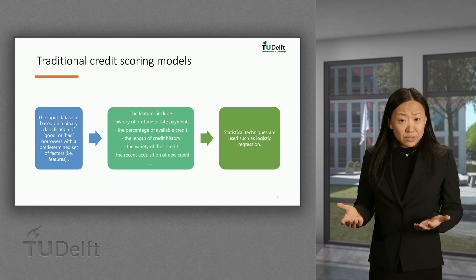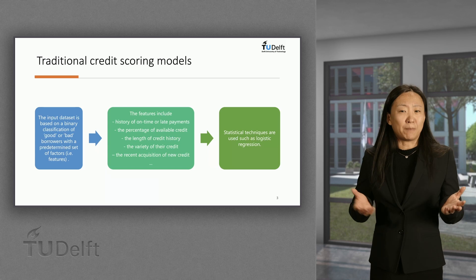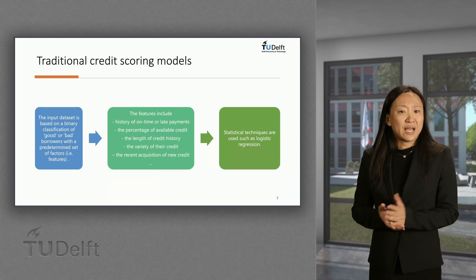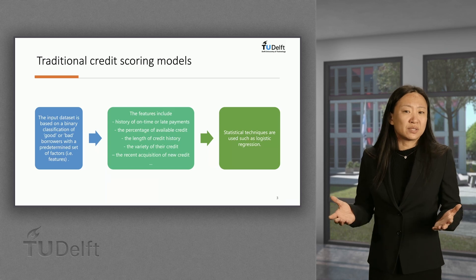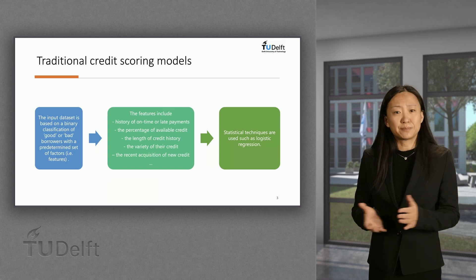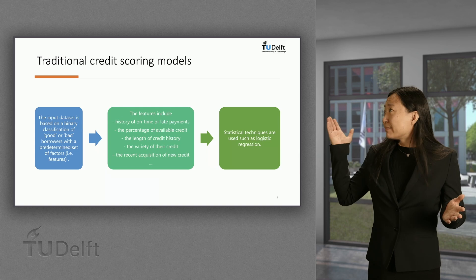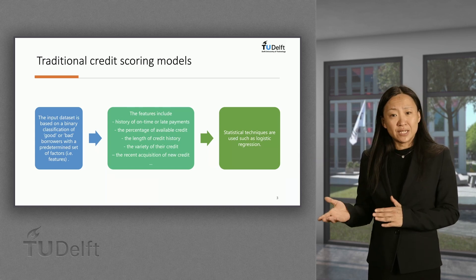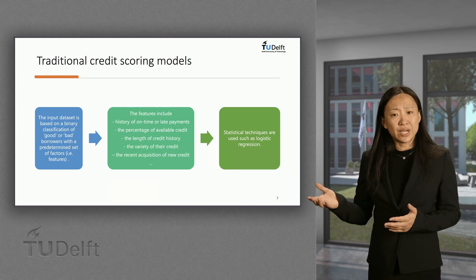Traditional credit scoring models take a binary classification of good or bad borrowers as an input, together with a predetermined set of factors, or in other words, features. These features include, for example, the applicant's history of on-time or late payments, the percentage of their available credit, and the length of their credit history.